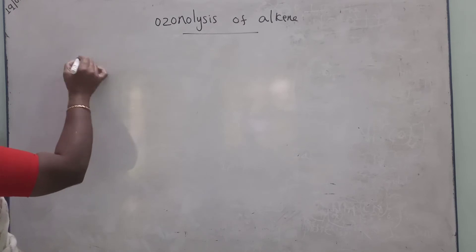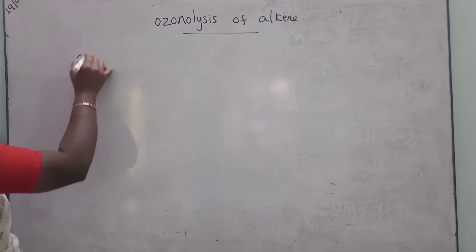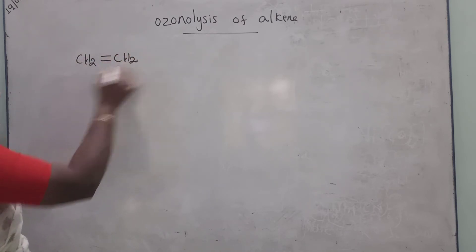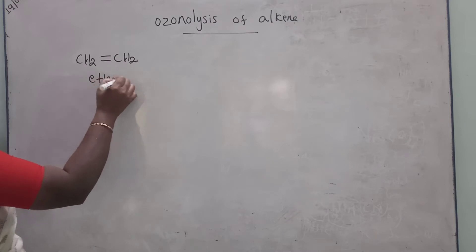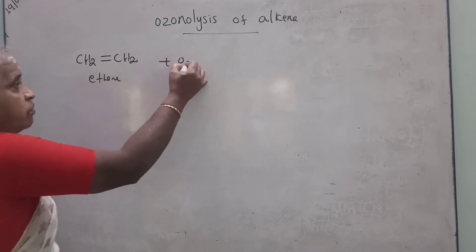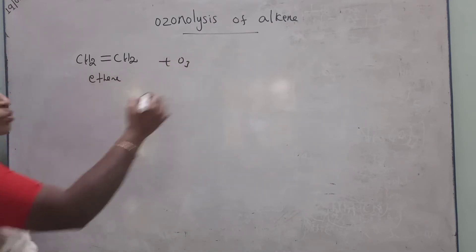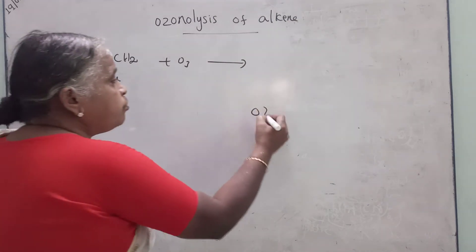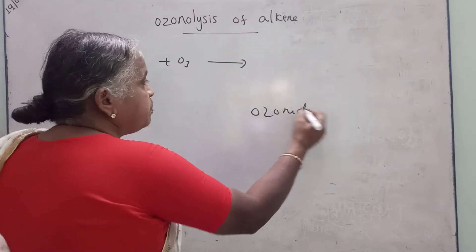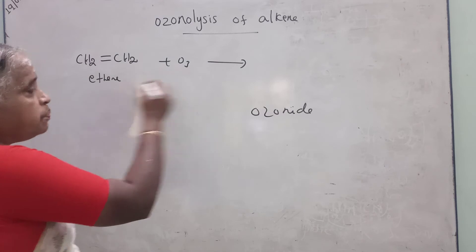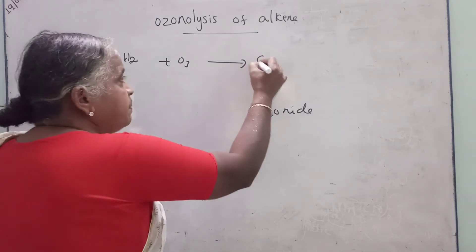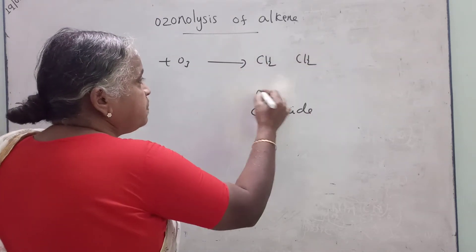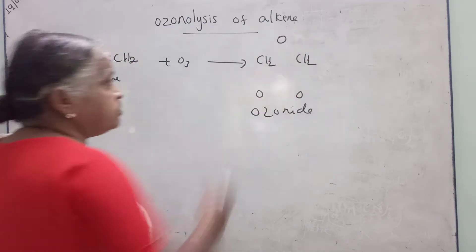First step — take a simple alkene, for example ethene. When ozone is applied, the first product of ozonolysis is the ozonide. The ozonide has a pentagonal structure — a five-membered ring.